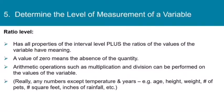Most of our numerical data is actually at the ratio level. At the ratio level, we have all the properties of the interval level, plus we have ratios of the values now have meaning. And a value of zero really does mean an absence of whatever we're measuring. Arithmetic operations such as multiplication and division can be performed on the values of the variable. Really, this includes all of our numerical data, except, as we said on the interval level, temperatures and years. For example, some data that would fall in the ratio level would be age, height, weight, number of pets, number of square feet, inches of rainfall, just about any number you can think of, just not temperature and not years AD or years BC.